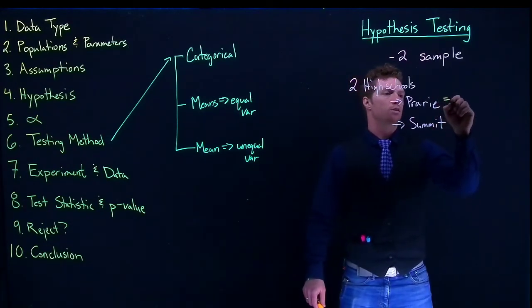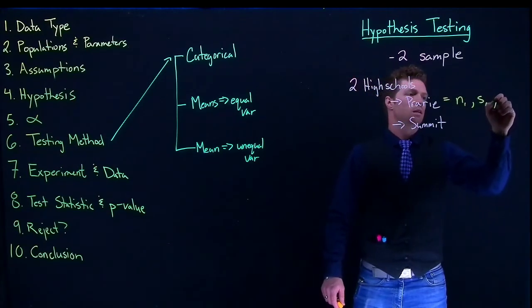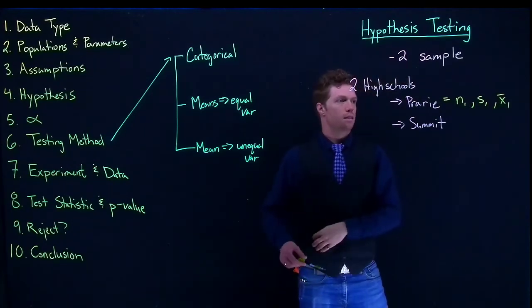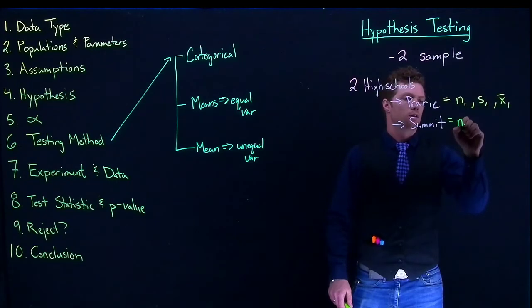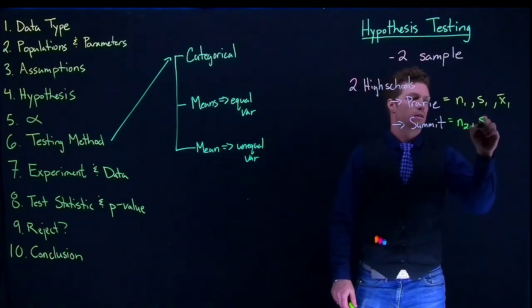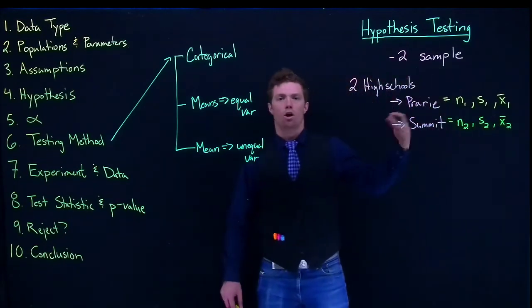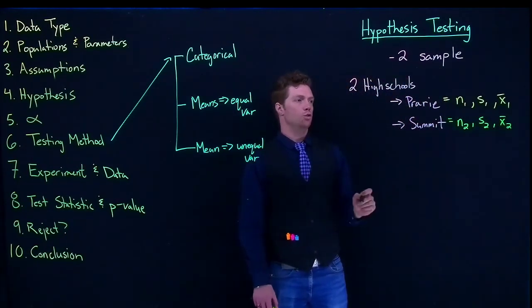This would be like N1, S1, X bar 1, something like that. And then we'd also have a sample size for Summit. We could go and look at all of those descriptive statistics really easily. Have our computer give them for these two groups.